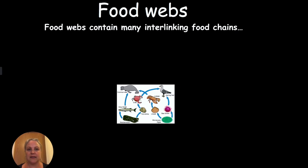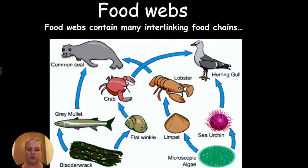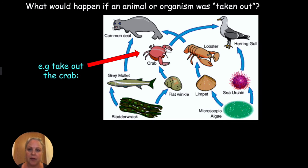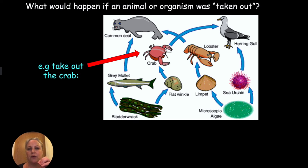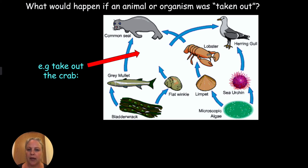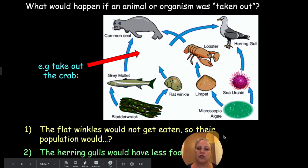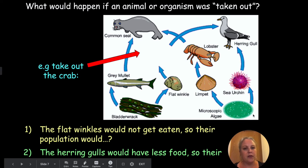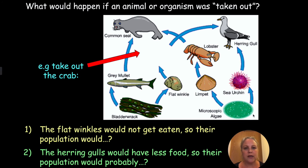Food webs contain many interlinking food chains. Here's another food web to look at in more detail. If we take out the crab, what do you think will happen? Pause the video and write down the answer. Look at what eats the crab and what the crab eats. Here are two starter sentences: the flat winkles would not get eaten, so their population would... and the herrings have less food, so what would happen to their population? Think carefully about those.